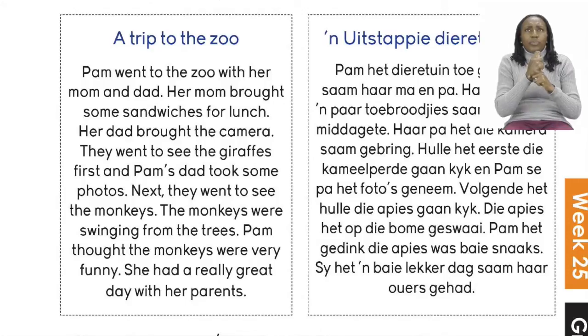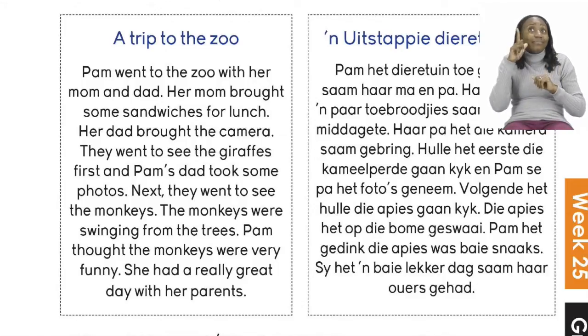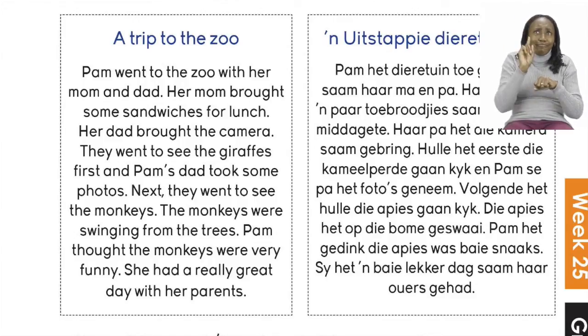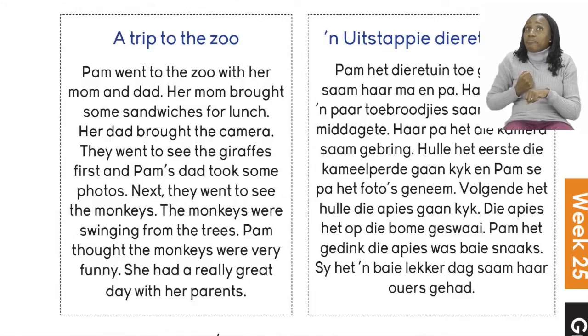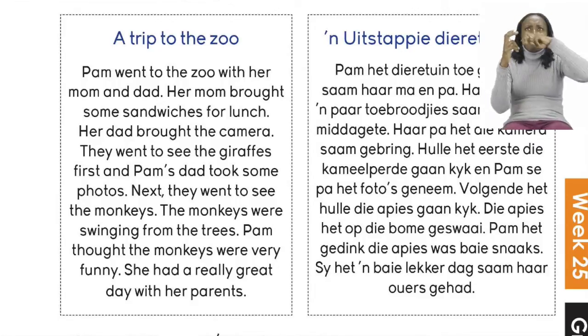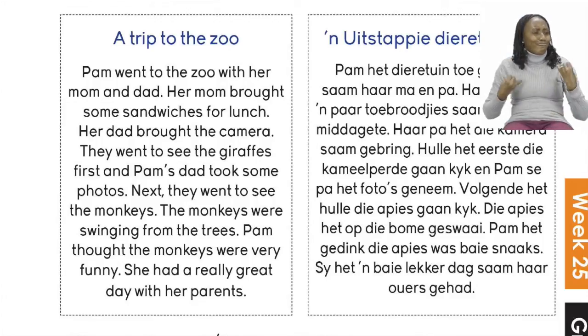A trip to the zoo. Pam went to the zoo with her mom and dad. Her mom brought some sandwiches for lunch. Her dad brought the camera. They went to see the giraffes first and Pam's dad took some photos. Next they went to see the monkeys. The monkeys were swinging from the trees. Pam thought the monkeys were very funny. She had a really great day with her parents.